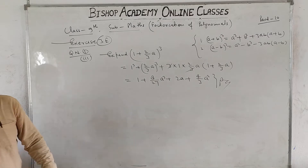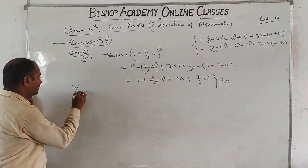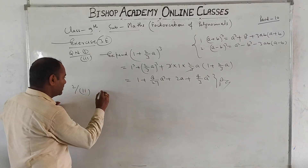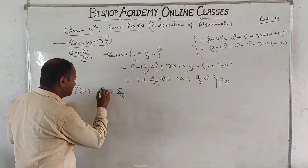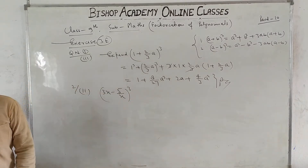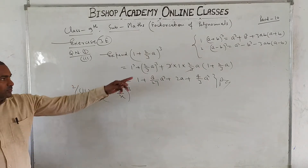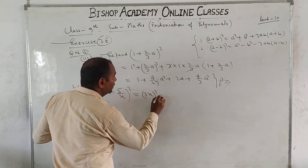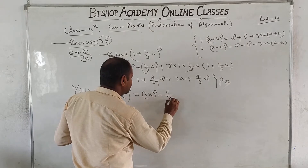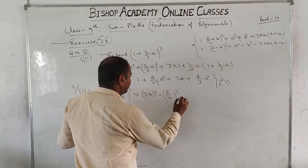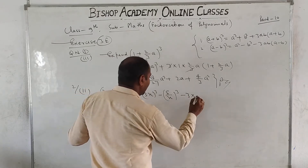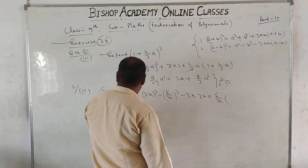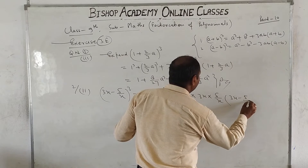Next, expand question number 2, second part: (3x minus 5/x) whole cube. This uses the second formula — a minus b whole cube. Breaking it using the formula: a cube, that is (3x) whole cube, minus b cube (5/x) whole cube, minus 3ab, where a's value is 3x, b's value is 5/x, in bracket (a minus b), that is (3x minus 5/x).